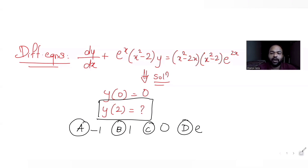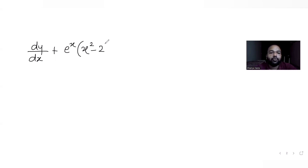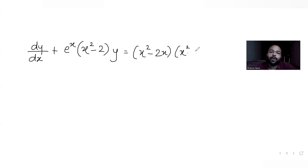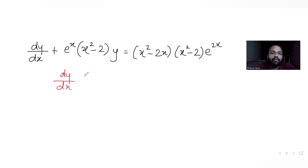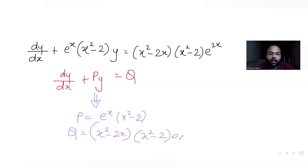Let's solve this differential equation. Writing it out: dy/dx + e^x·(x²-2)·y = (x²-2)·e^x. Comparing with the general form dy/dx + Py = Q, we get P = e^x·(x²-2) and Q = (x²-2x)(x²-2)·e^(2x).